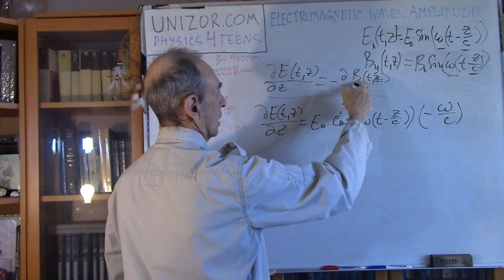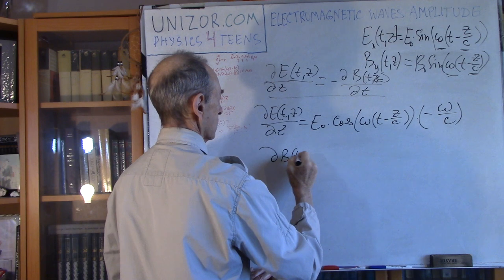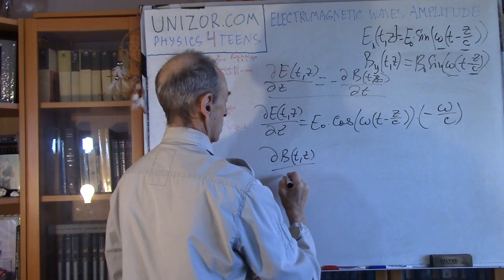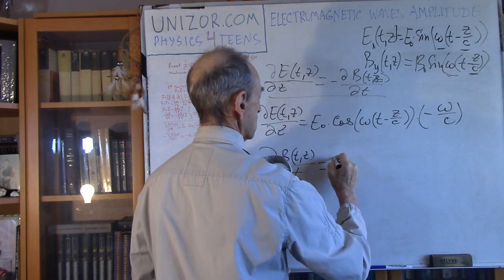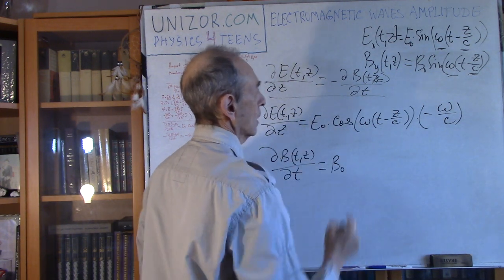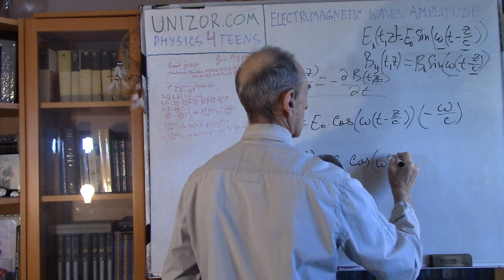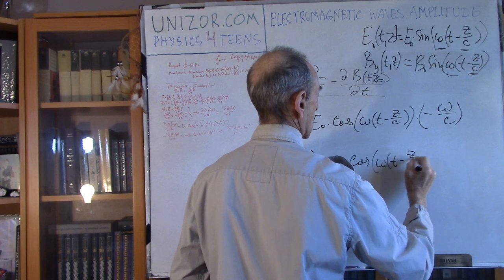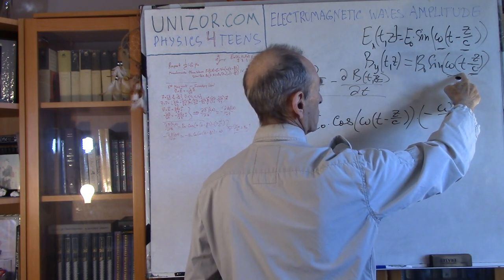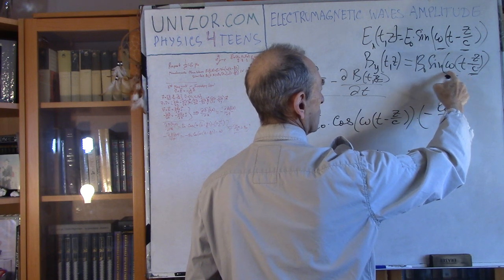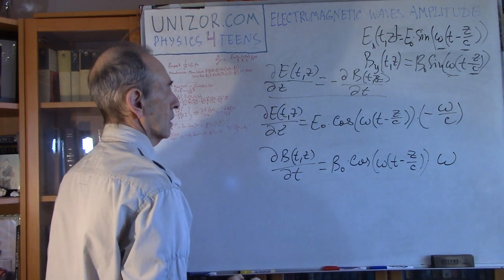Derivative by time of the magnetic component, dB of tz by dt, is similarly B0 times derivative of sine, which is cosine of the same thing, times derivative of the inner function. We have a derivative by t, so the only coefficient is omega.